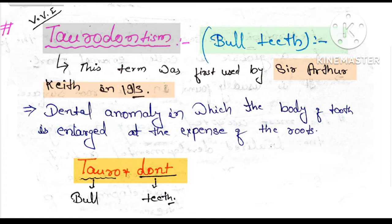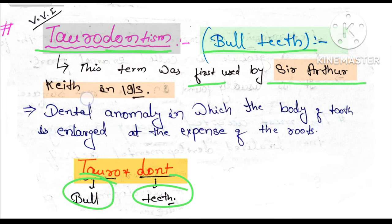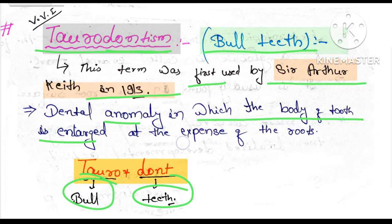Today we will discuss taurodontism. 'Tauro' means the bull and 'dont' means the teeth, so taurodontism is also known as bull teeth. The term taurodontism was first used by Sir Arthur Keith in 1913. This is an anomaly in which the body of the tooth is enlarged at the expense of the root.